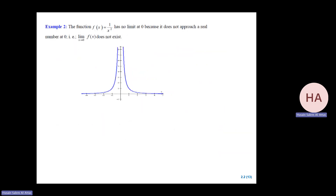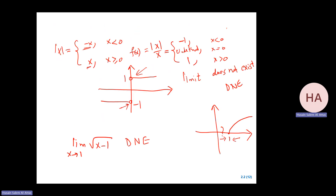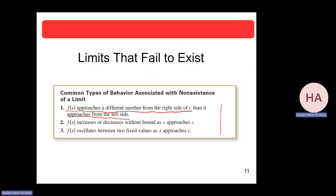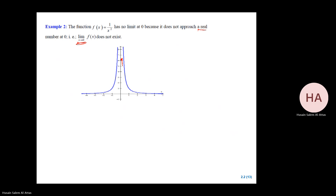The second case: if you look at this graph, what is the limit as x goes to zero? The function does not approach a specific number — it goes to infinity. It increases without bound. This is the second case where the limit fails to exist: f(x) increases or decreases without bound, either going to infinity or minus infinity.